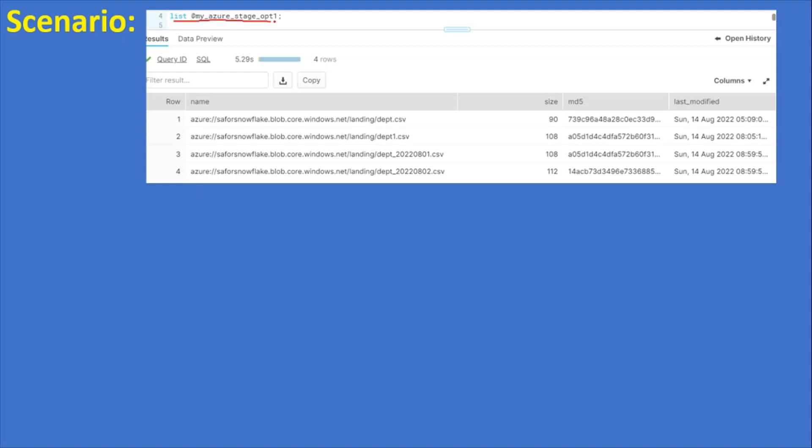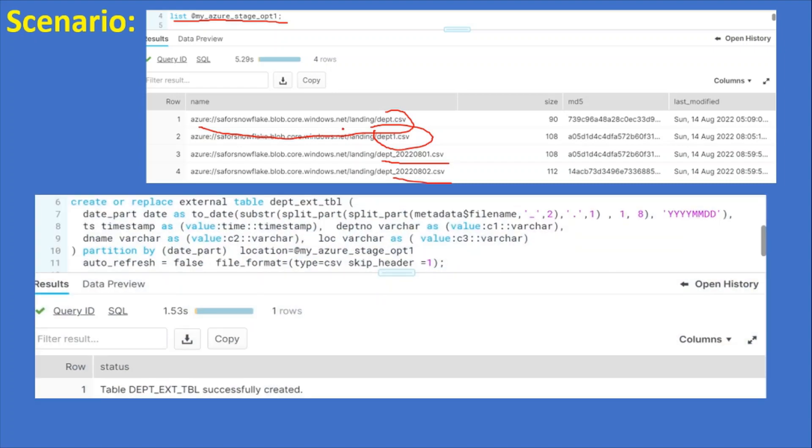Another question scenario: This is the stage. Create an external stage and in this stage please note these are the files: dept1.csv, dept_ext_tbl, etc. Total four files are there - two files are with date and two files without the date. On top of this, by using this stage, assume that we have created an external table. Create or replace external table with table name, and here we have columns like date_part which is extracted from metadata $filename, and another one ts timestamp and dname.